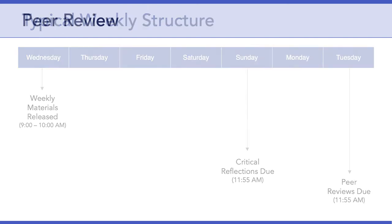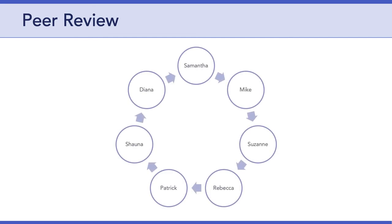Now let's talk about the peer review process. Because this is a small class with an odd number of students, I created a randomly generated peer review round-robin chart. You can see it here. This chart tells you who you should peer review each week. You read this chart clockwise, so everyone will review the two students who come after their name in the cycle.